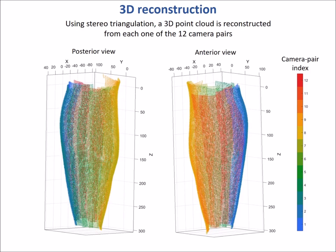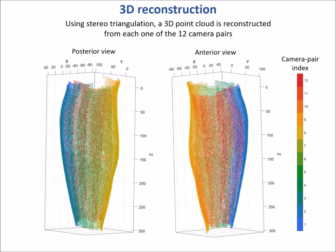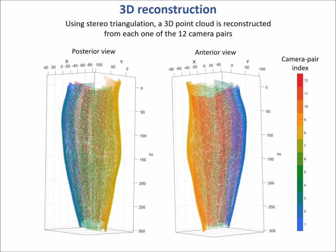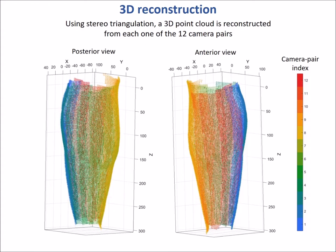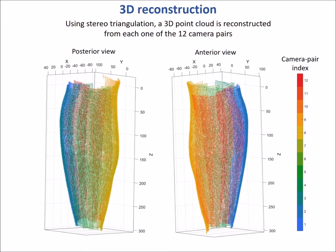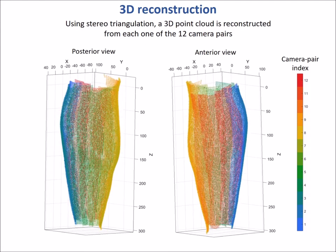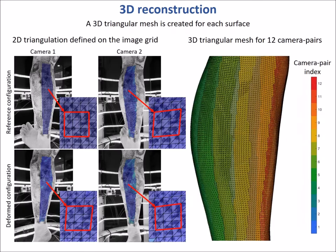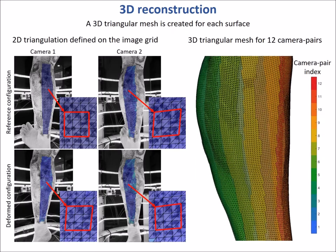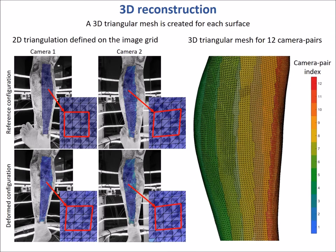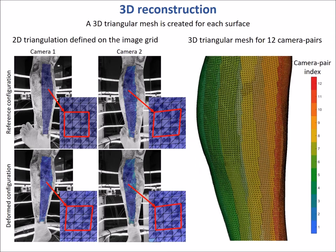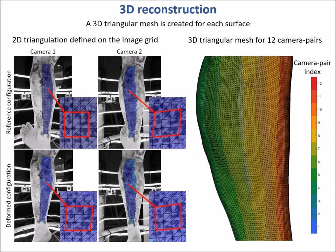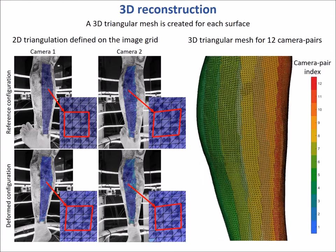In this figure, each color represents a point cloud reconstructed from one camera pair. Twelve cameras are sufficient to reconstruct the full 360-degree surface of the shank. The point correspondence on the images also defines a tessellation that is then transformed into 3D triangular meshes, which may have overlapping regions.